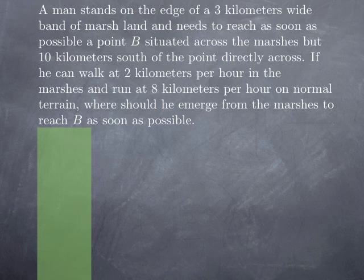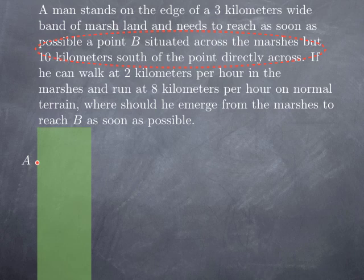We know that he can walk at 2 km per hour in the marshes and run at 8 km per hour on normal terrain, and we would like to know where he should emerge from the marshes to reach his destination as soon as possible. As usual, one of the first things we want to do is draw a picture to represent the situation. Here are the marshes. Our man stands on the edge at a point we are going to call A. He wants to reach point B, which is across the marshes 10 km south. Here is a point I will call C directly across from A.